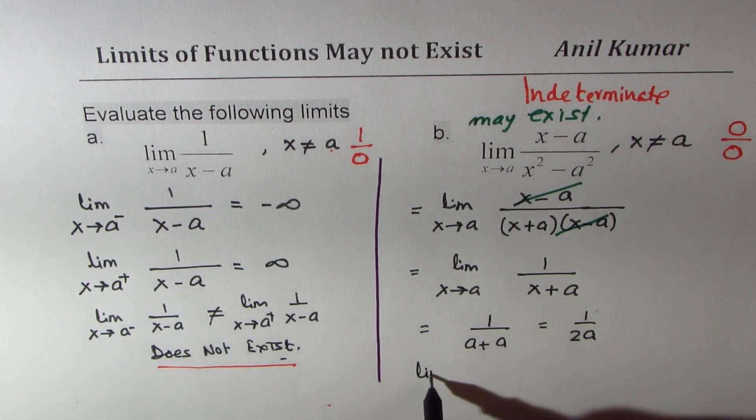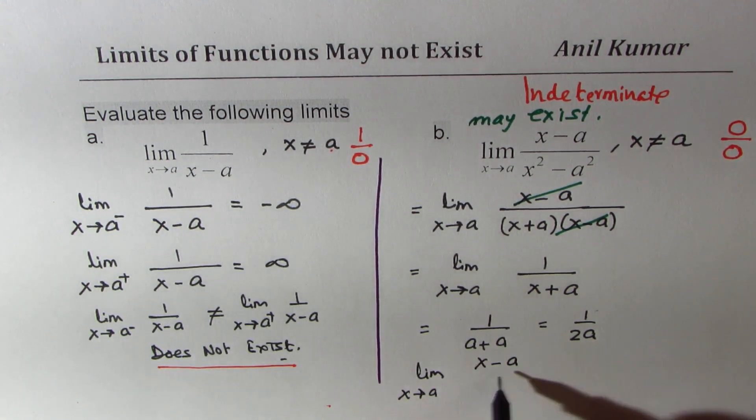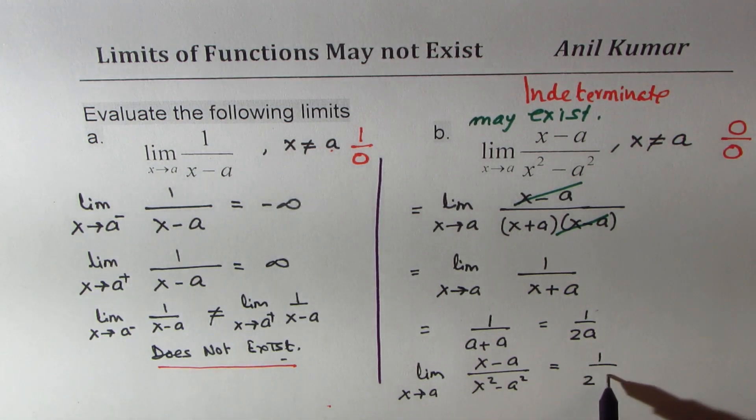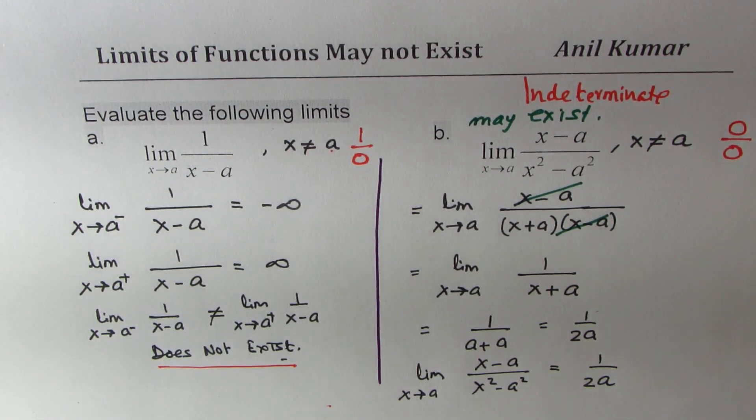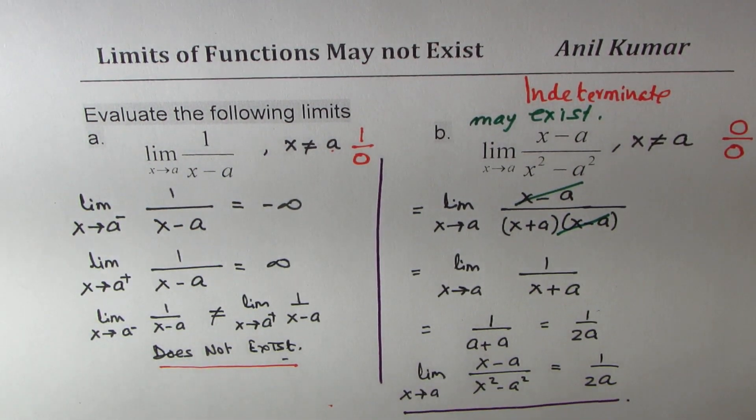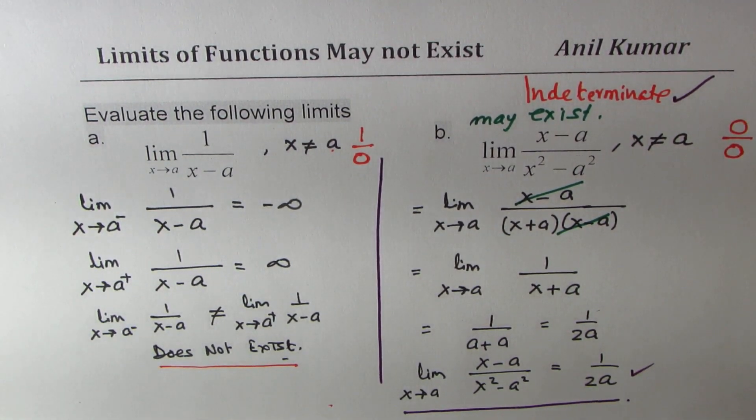So we know that the limit as x approaches a for x minus a over x square minus a square is indeed equal to 1 over 2a. So it exists. Perfect. So it is important to know that if we have a case of indeterminate, then the limit may exist.